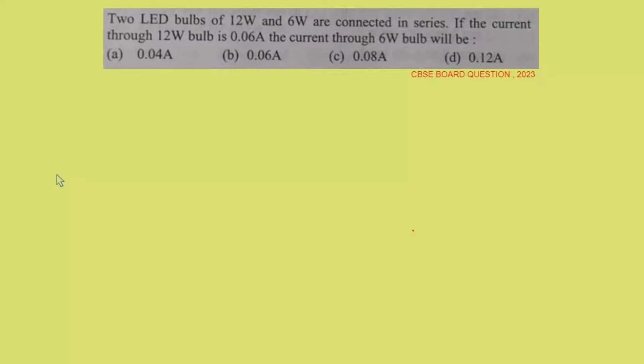Two LED bulbs of 12 watt and 6 watt are connected in series. If the current through the 12 watt bulb is 0.06 ampere, the current through the 6 watt bulb will be?